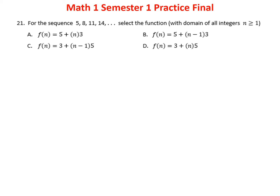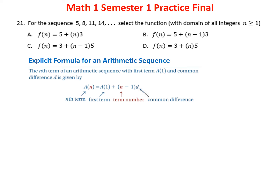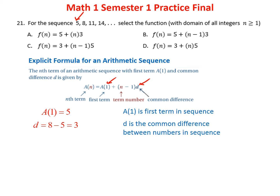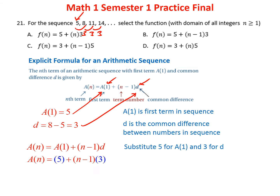Problem twenty-one involves an arithmetic sequence. The formula for the nth term is the first term plus (n minus 1) times the common difference. The first term is 5, and the common difference is 8 minus 5 equals 3. Plugging in: the nth term equals 5 plus (n minus 1) times 3. The answer is B.